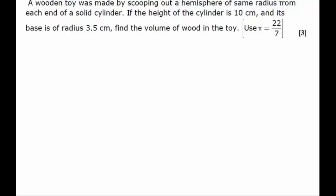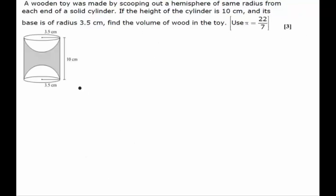Hello students, in this question we are given that a wooden toy was made by scooping out a hemisphere of same radius from each end of a solid cylinder. The height of the cylinder is 10 centimeters and the base is of radius 3.5 centimeters. We have to find out the volume of the wood in the toy.